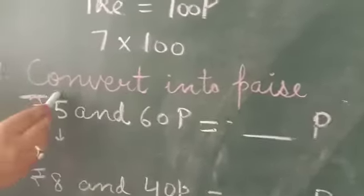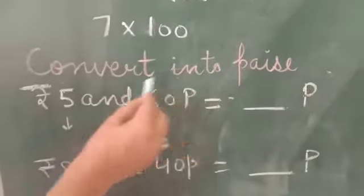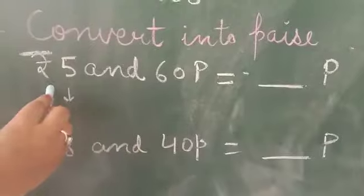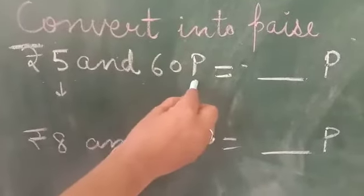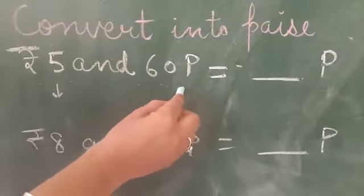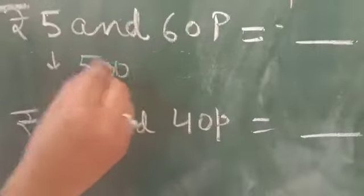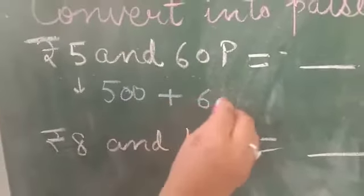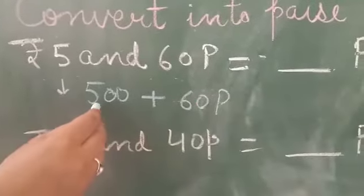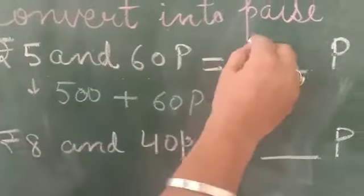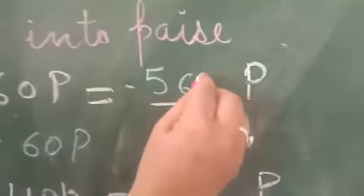Next topic: convert into paise. You have to convert into paise again. You have 5 rupees and 60 paise. You have extra paise given. So 5 rupees will become 500, and we add the 60 paise. 500 plus 60 is equal to 560 paise. Clear?